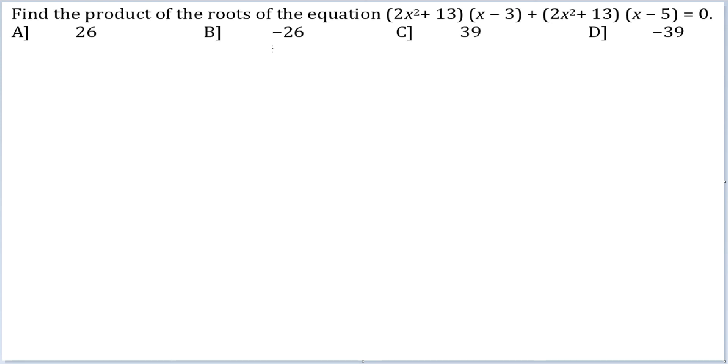The product of the roots of the equation is given by the constant term of the expression. The constant term here would be -39 plus -65, which is -39 - 65 or altogether -104. But it is not the final thing.